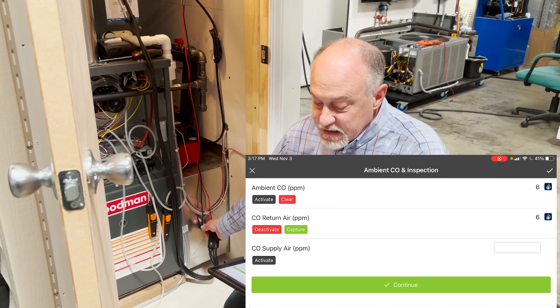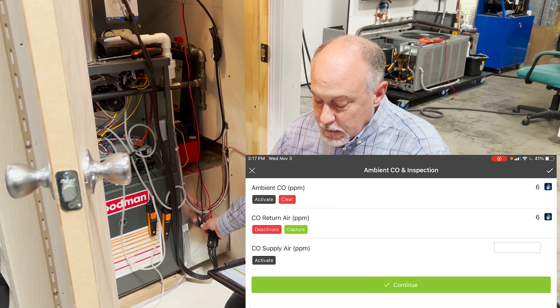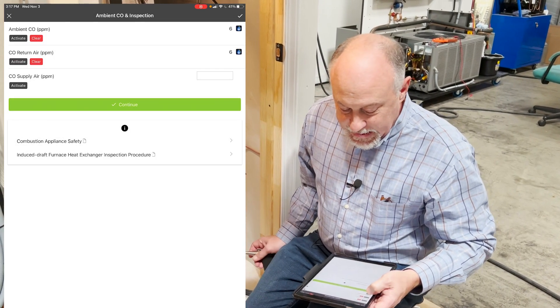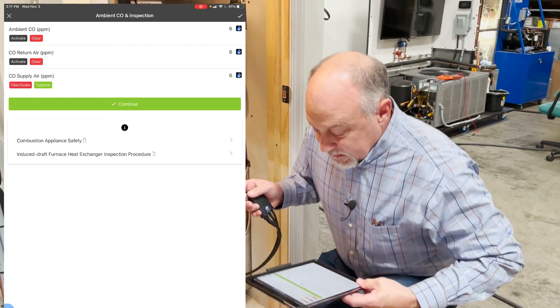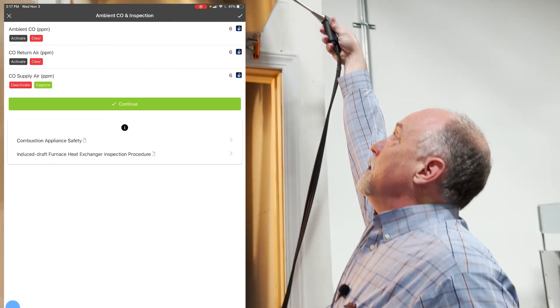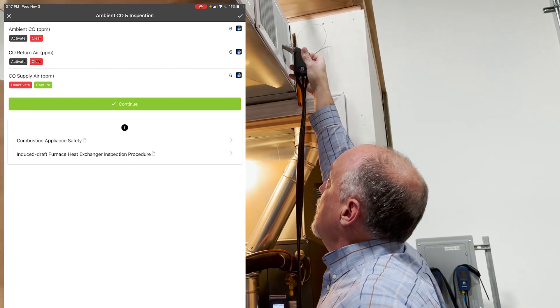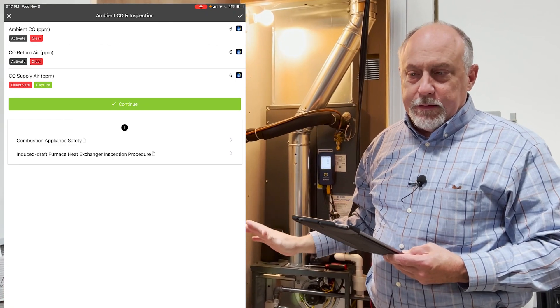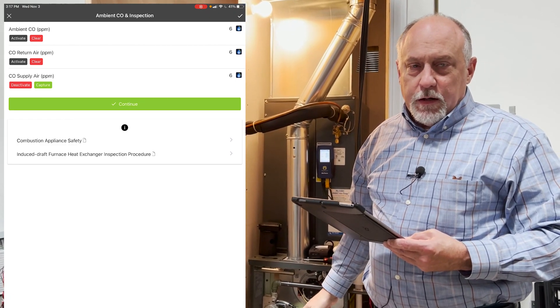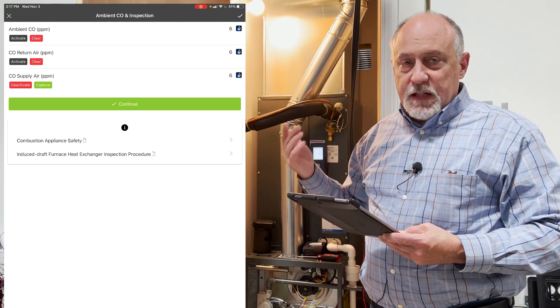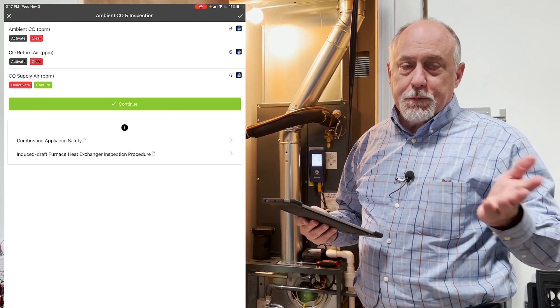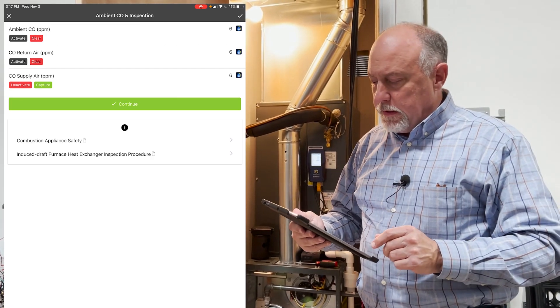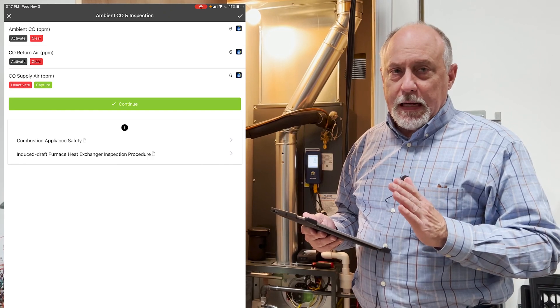And so you can see I got six in, six out. And I'm going to pause this here, and I'm going to move it up. So I'm going to capture this one. I'm going to hit activate again, and I'm going to move this up to my supply. So what we're trying to do is we're trying to make sure that if there's any background CO in, what it's showing us is it came into the return, it went through the furnace, the CO did not go up. So the furnace is not what's producing the CO. Again, background from a tow motor next door. So we'll give this a couple of minutes here, and then I'm going to capture that reading.